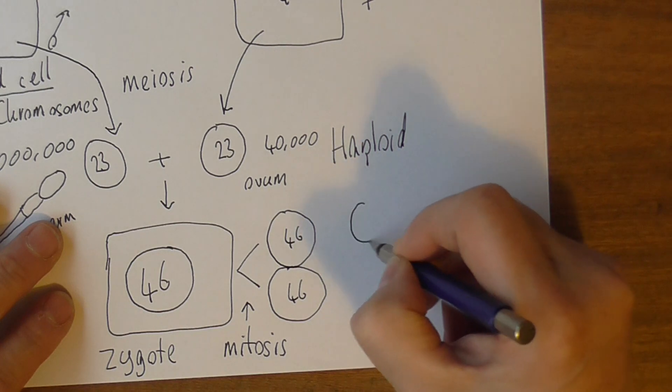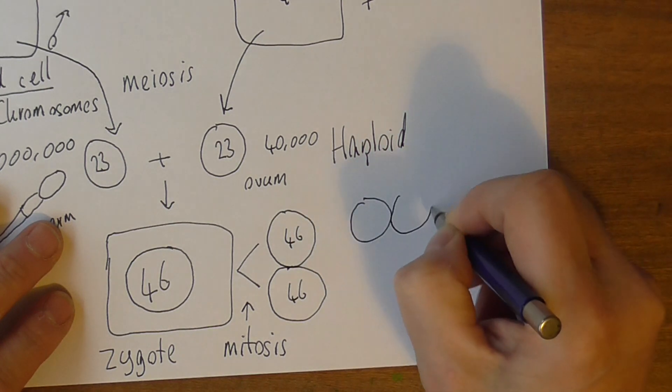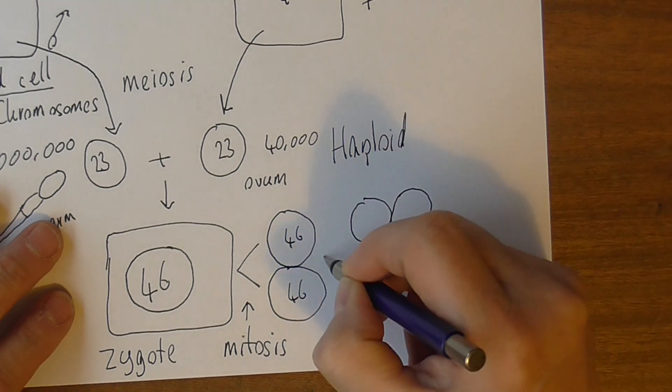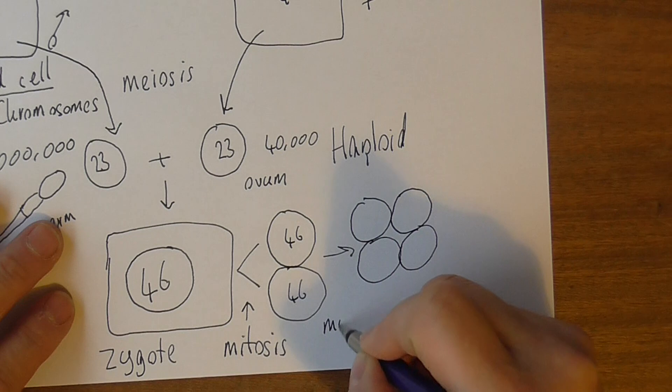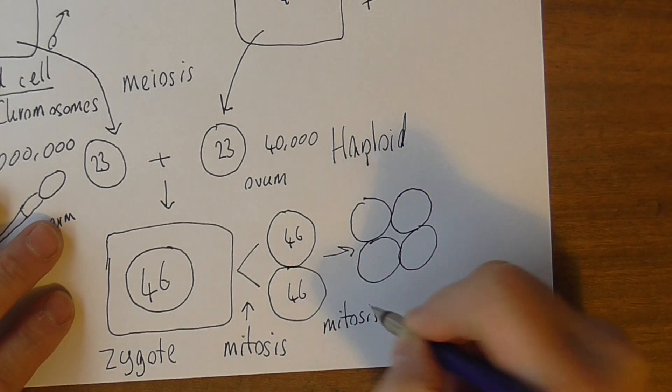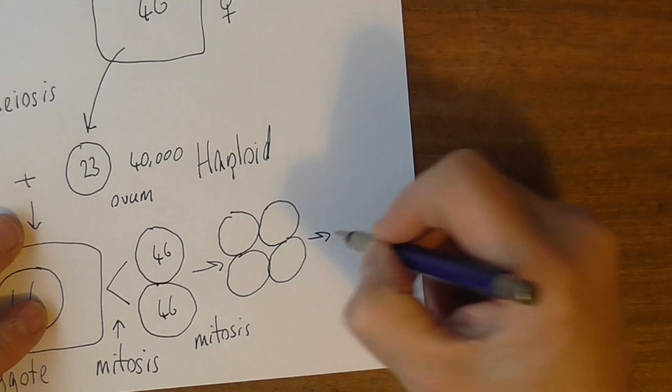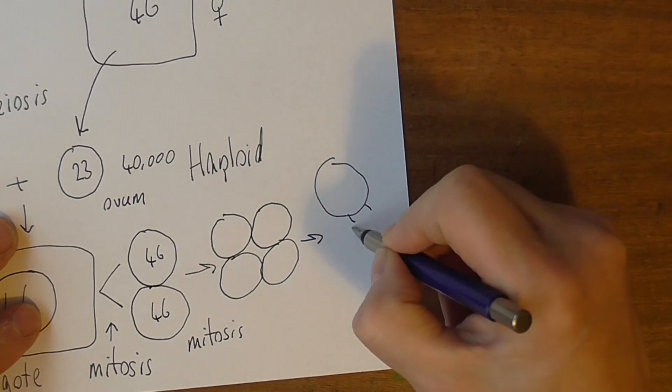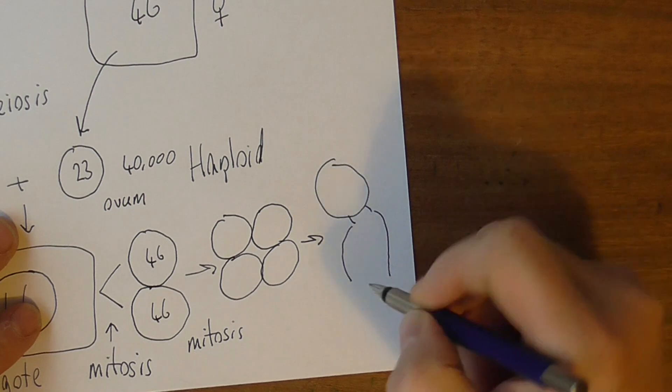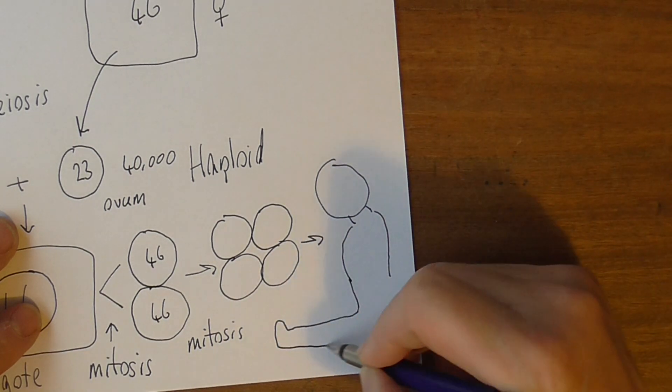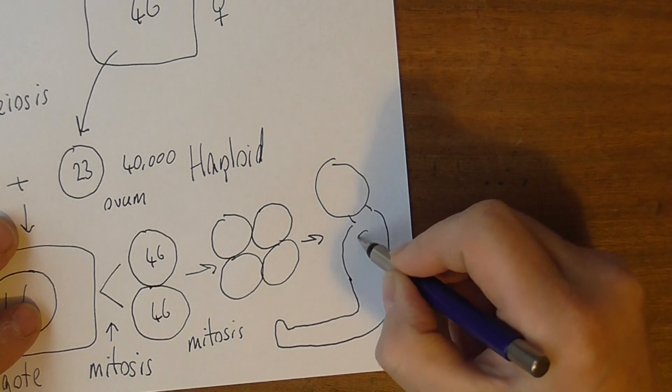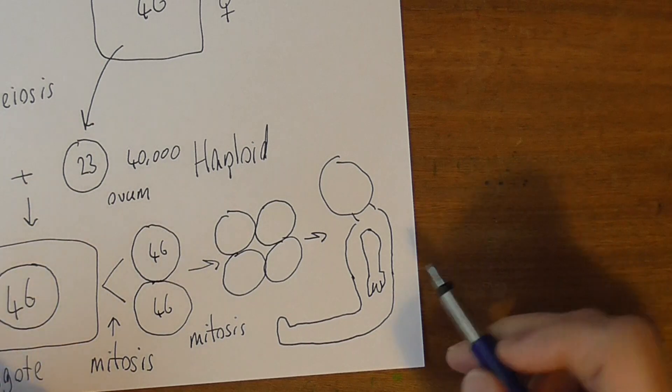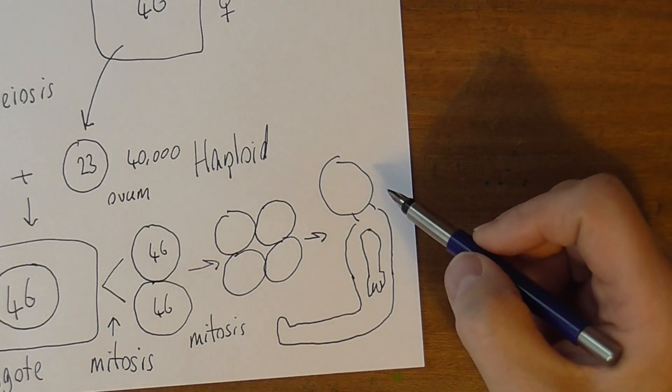These divide of course again to produce four, until we have the trillions of cells. Again, another mitosis, until we have the trillions of cells that comprise the whole body. Just ongoing mitosis, differentiation into the specific tissues of the body.